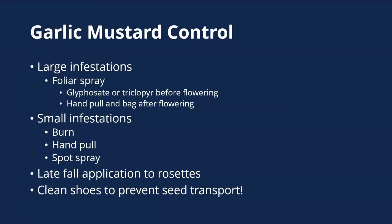This plant is widespread across Illinois — probably in every county though these are the counties we have records for. For larger infestations, foliar spray is probably your best bet — glyphosate or triclopyr before flowering — or hand pull and bag it before or after flowering for non-chemical control. For small infestations, torching, hand pulling, or spot spraying works really well. We've also had good luck with late fall applications to the rosettes, which gives you some selectivity since other plants are senesced at that time.